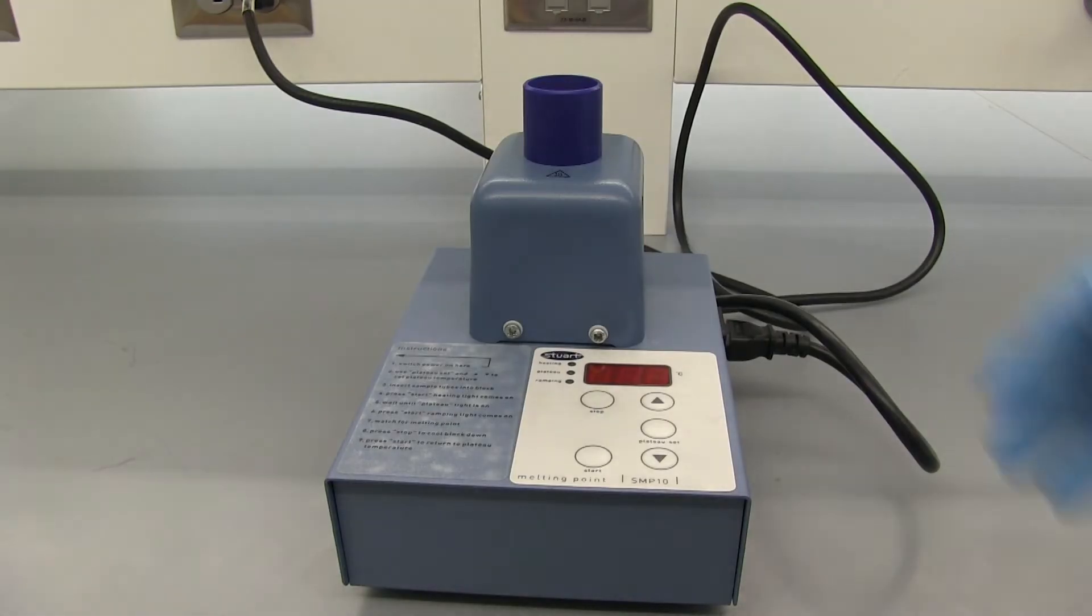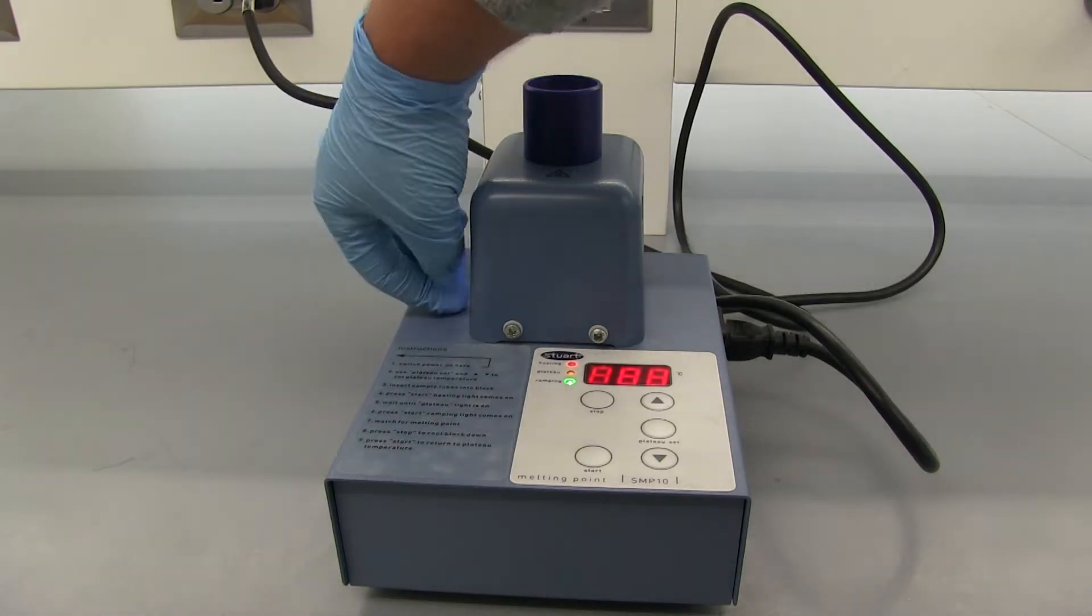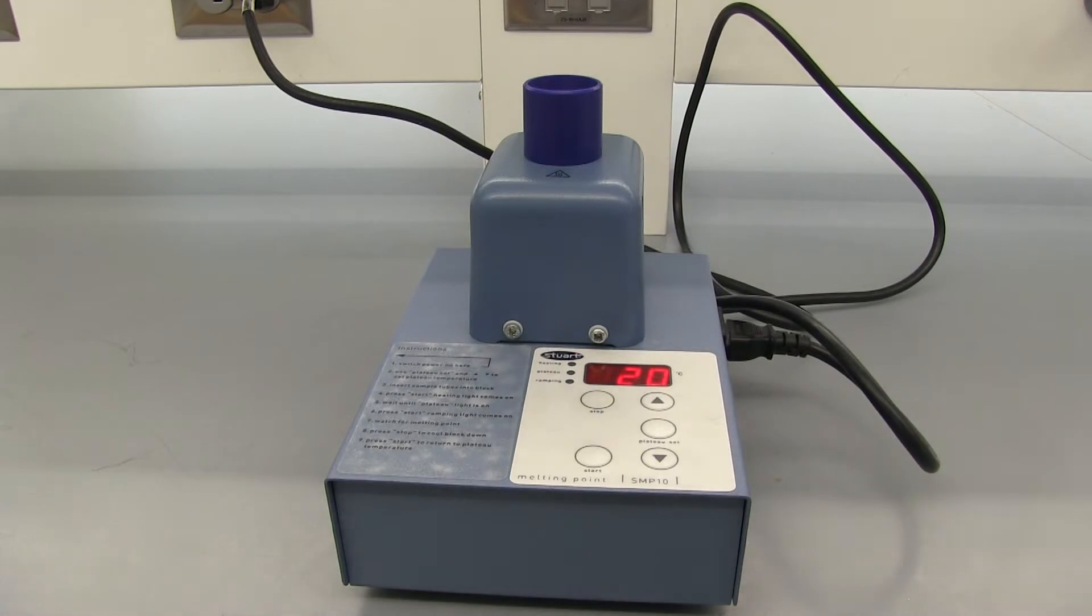Alright, so this is our melting point apparatus. There is a switch here on the side. There's also instructions on how to operate it here. First thing we're going to need to do is set a plateau. So the plateau is where it's going to stop heating and then if we're doing a slow melting point we can ramp it from there. If not, we can turn it off from there.